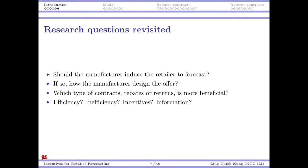To summarize our research questions: Should the manufacturer induce the retailer to do forecasting? If so, how should the manufacturer decide the offer? Which type of contract — returns or rebate — is more beneficial for the manufacturer? And under any equilibrium, we discuss efficiency, inefficiency, incentive issues, and how information asymmetry affects their behaviors in this particular problem.